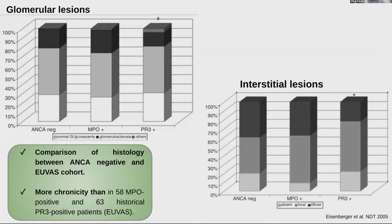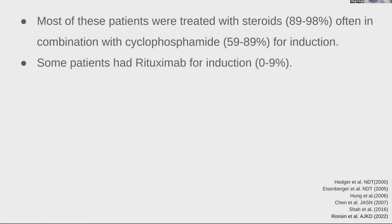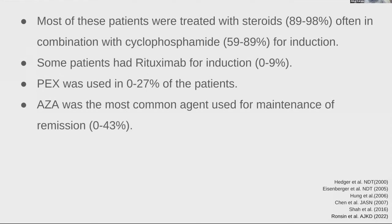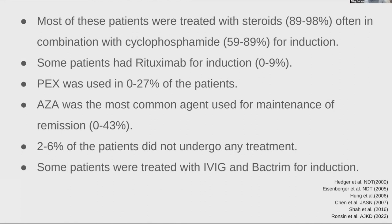As far as treatment is concerned, most patients were treated with steroids, often in combination with cyclophosphamide. Later cohorts also had up to 90% treated with rituximab. Plasmapheresis was used in up to 27% of patients, especially in earlier cohorts. The most common maintenance agent was azathioprine. Two to six percent received no treatment, likely due to more fibrosis on biopsy, which also contributes to the delay in diagnosis seen in ANCA-negative patients.